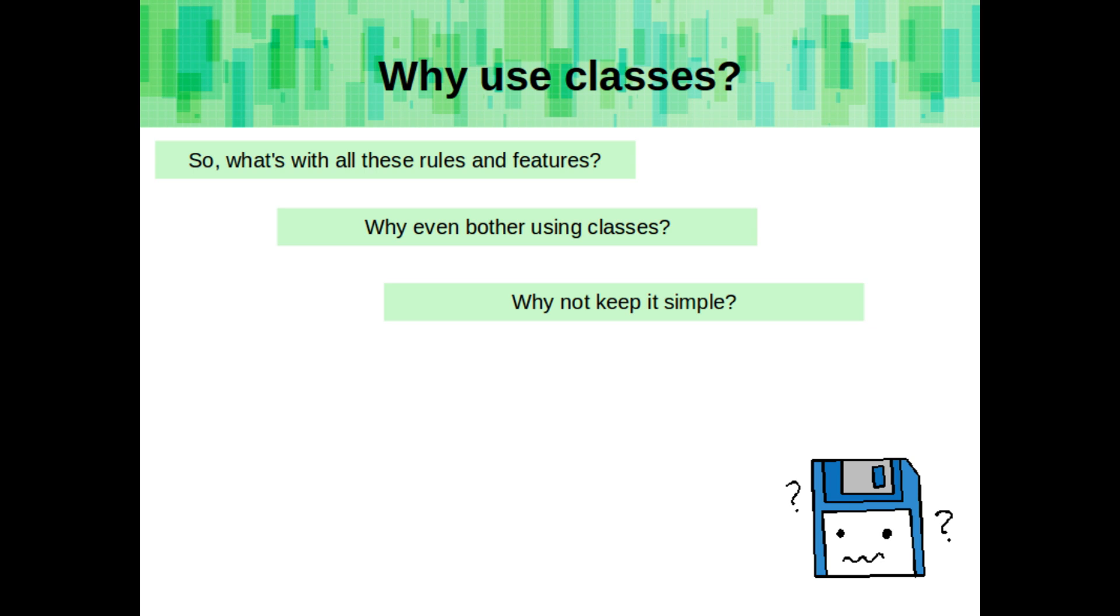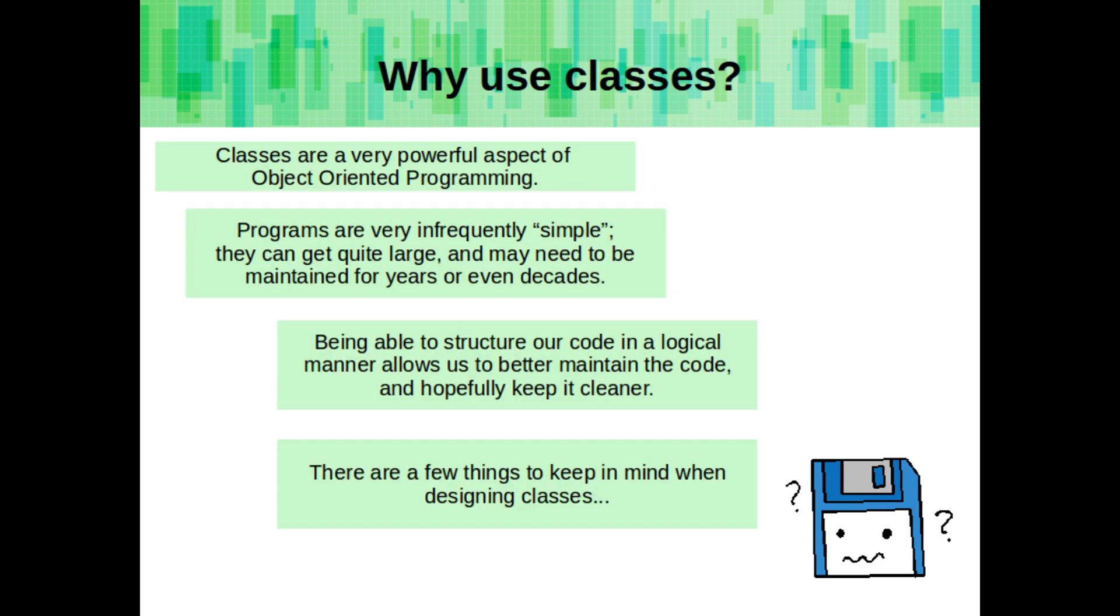So, what's with all these rules and features? Why even bother using classes, and why aren't we keeping it simple? Classes are a very powerful aspect of object-oriented programming. Programs are very infrequently simple, and they can get quite large and may even need to be maintained for years or decades. Being able to structure our code in a logical manner allows us to better maintain the code, and hopefully keep it cleaner. There are a few things to keep in mind when designing classes.